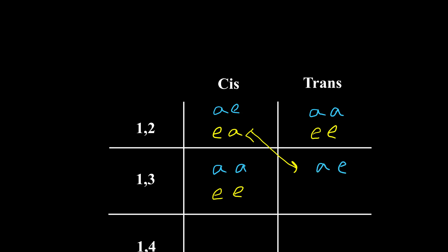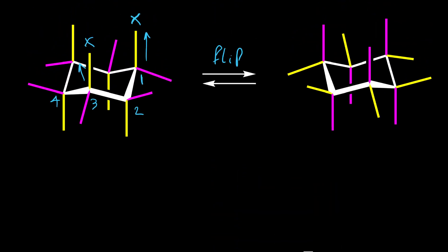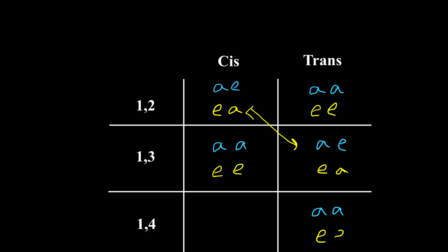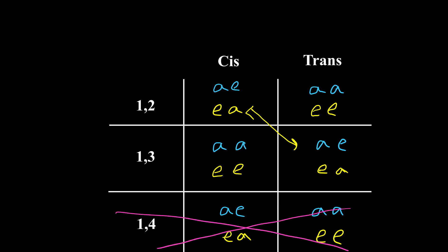For positions one and four, if we have one X here and one X here, axial-axial they are trans again. So one and four is exactly like one and two: axial-axial is trans, equatorial-equatorial is trans, and the cis case is the same as well. Basically we don't need to memorize this separately because one-two and one-four are exactly the same.